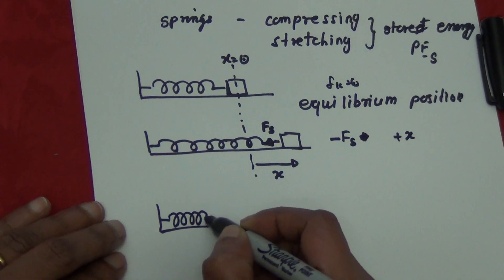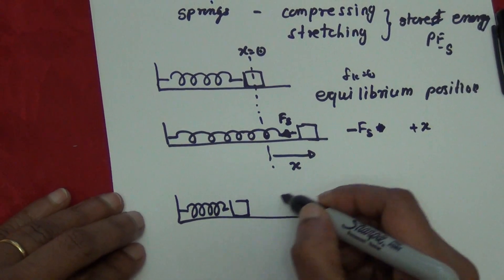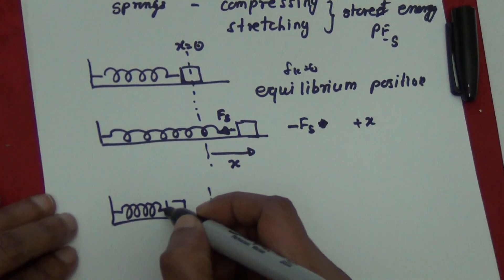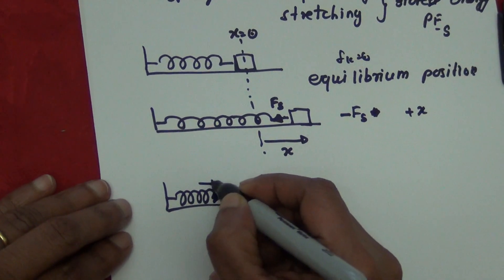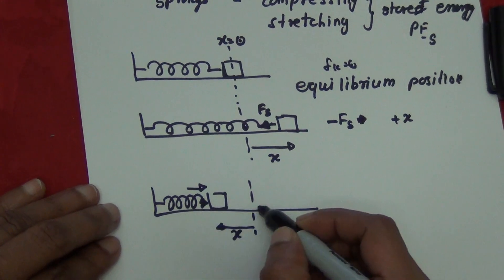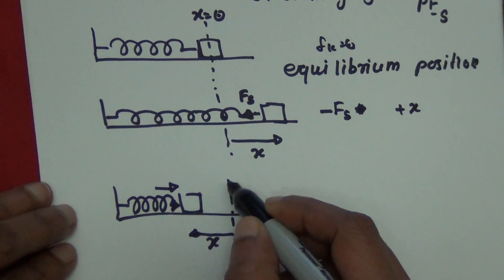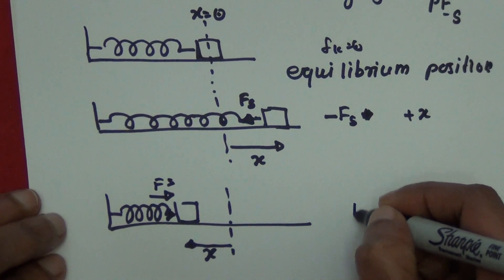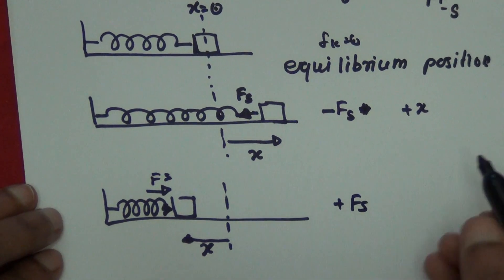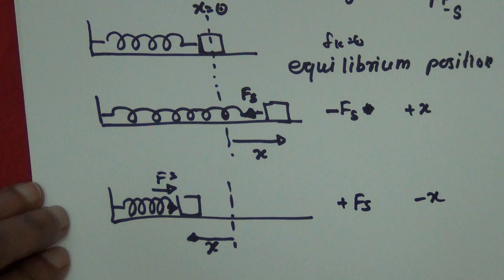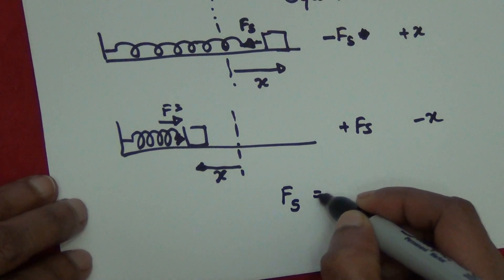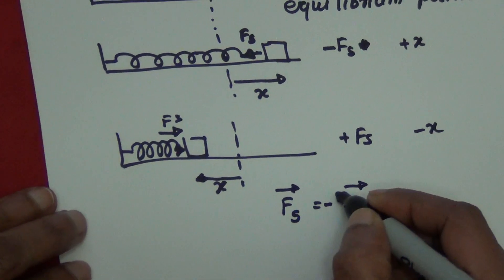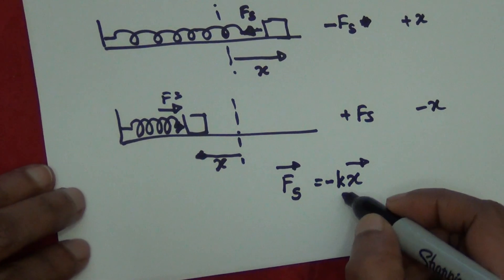Now, you are compressing the spring through a distance x. While you are compressing, the spring force acts in the positive direction to restore the block back to the equilibrium position. So the spring force is in the positive direction and the displacement is in the negative direction. All the time, the spring force and x are in opposite directions, and to make an equation you need a constant.